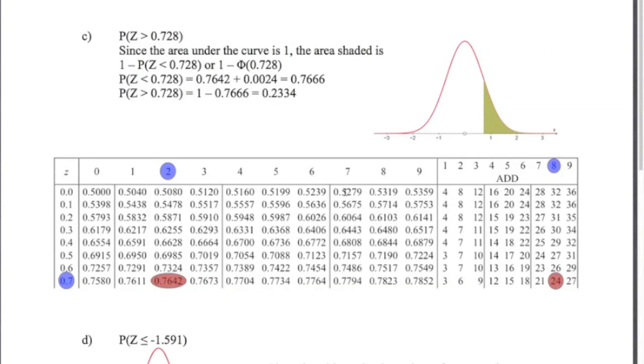Part C, we want to know the probability Z is greater than 0.728. The table, remember, gives us values from a Z value all the way down. Remembering that the area under the curve is 1, to work out this area, we just say 1 minus the area from 0.728 down. And that will give us this area here, or this probability here. So using the third decimal place idea again, 0.72 gives us this value. We go to 8, the third decimal place, and the value here is 0.0024. So we have to add 24 on to the last two decimal places there. 0.7642 plus 0.0024, giving us 0.7666. So that's the value from there all the way down. So 1 minus that gives me the area from that value up. So the answer is 0.2334.